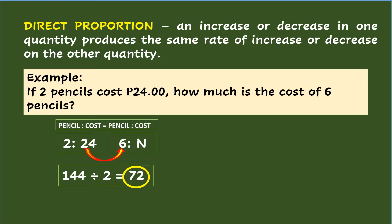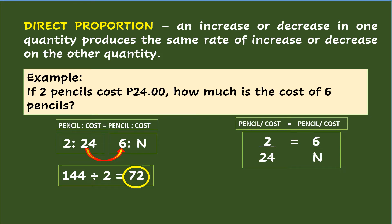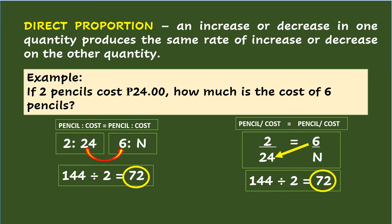In fraction form, the direct proportion is written as 2 over 24 equals 6 over n, wherein the order of terms in ratio would be pencil over cost equals pencil over cost. Multiplying the complete pair: 6 times 24 equals 144. Dividing the product 144 by 2 is 72. So the answer is 72.